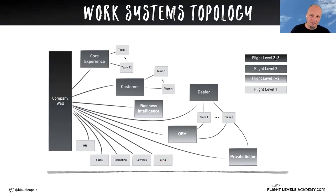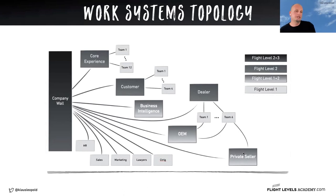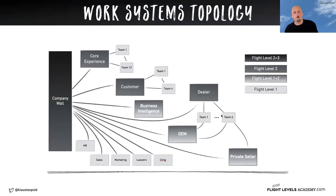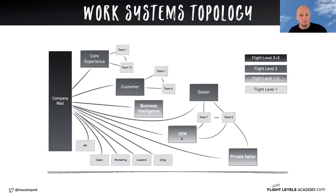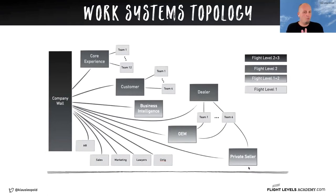We see this very often in real life — flight levels somehow merged together. Here we have business intelligence, OEM, and private seller — these are flight level one and two combinations. Core experience, customer, and dealer are just flight level two systems, and here we have the flight level one systems. This is a work systems topology of an organization doing car classifieds. They think their customer groups are: end customer, dealer, OEMs, and private sellers. It's not the correct work systems topology — it's the latest state of our understanding of how we are working these days.